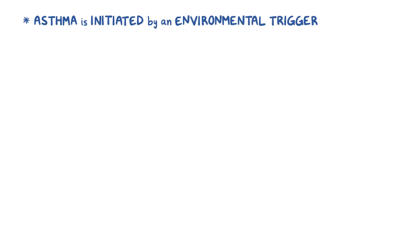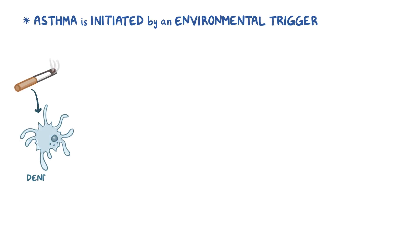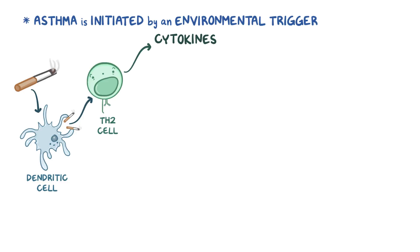Now the molecular pathway that leads to asthma is actually pretty complex, but it's often initiated by an environmental trigger. Allergens from environmental triggers like air pollutants or cigarette smoke are picked up by dendritic cells, which present them to a type 2 helper T cell, or Th2 cell, in the lamina propria. These cells then produce cytokines like IL-4 and IL-5, which causes the inflammatory response.